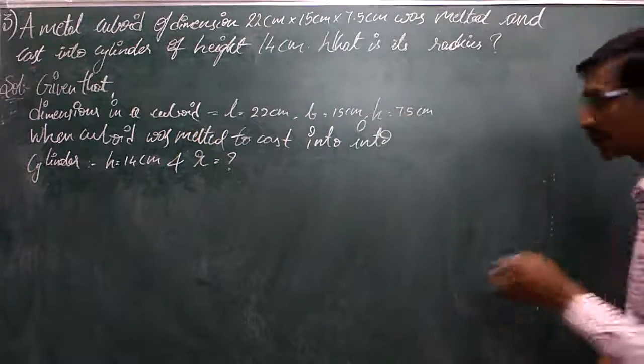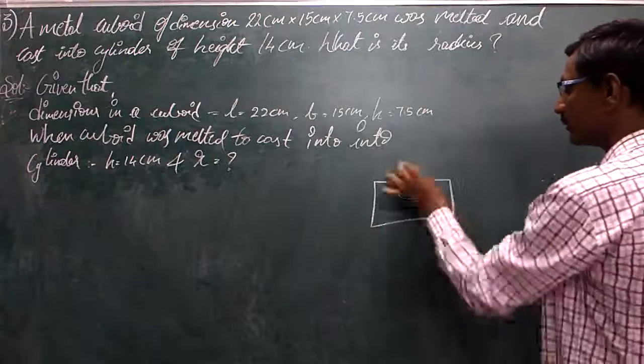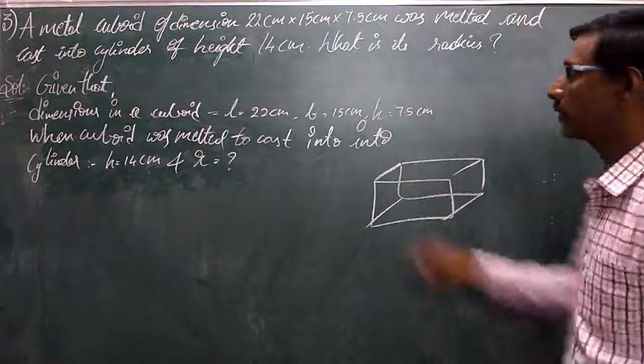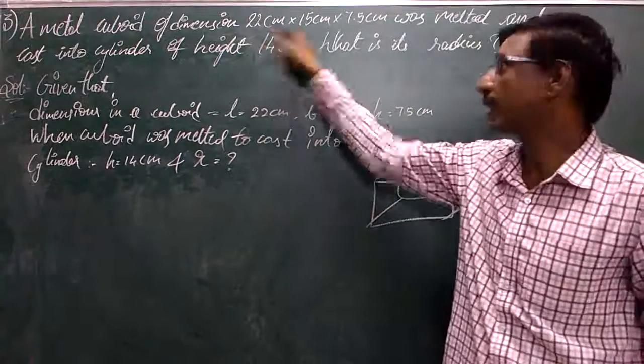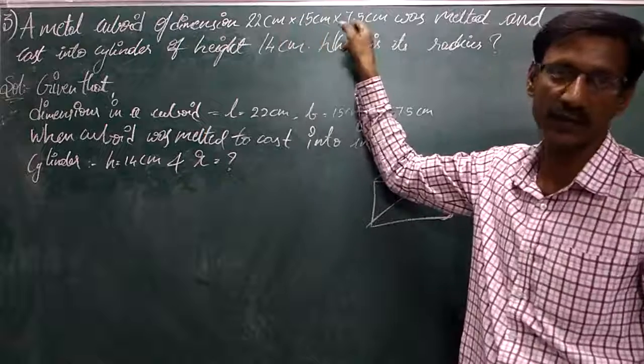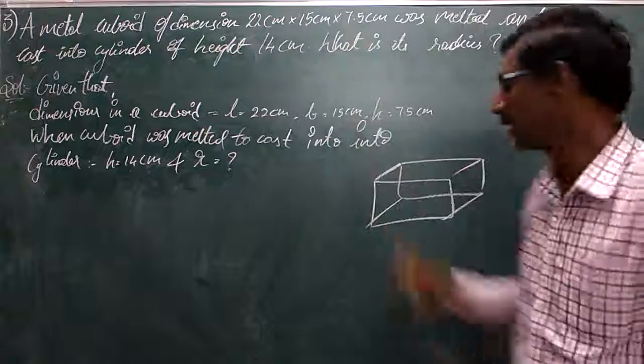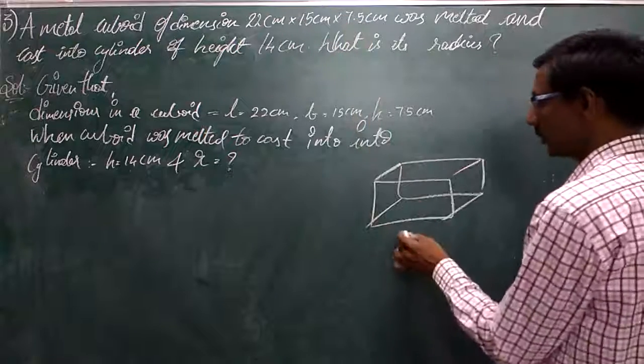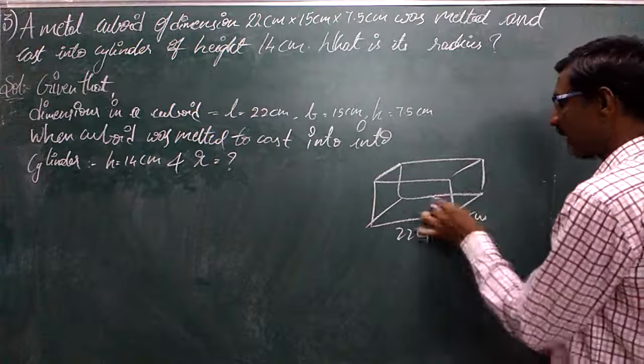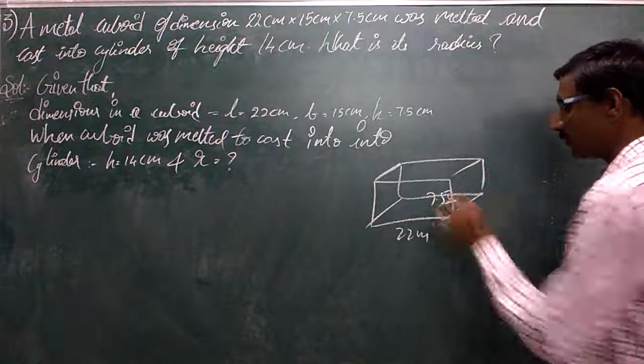This is my cuboid here. We have length, breadth, and height. The length is 22 cm, the breadth is 15 cm, the height is 7.5 cm.